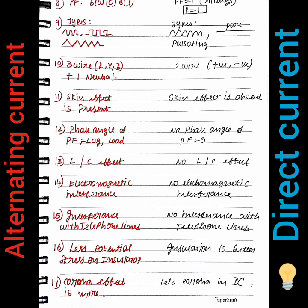In AC, electromagnetic interference is created by the alternating magnetic field of the supply. DC also has electromagnetic interference but to a lesser degree. Additionally, AC causes interference with telephone and communication lines, whereas DC does not.